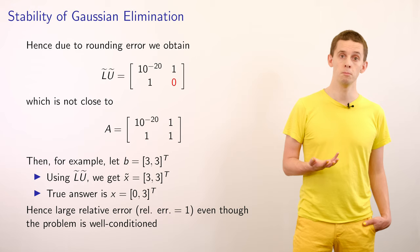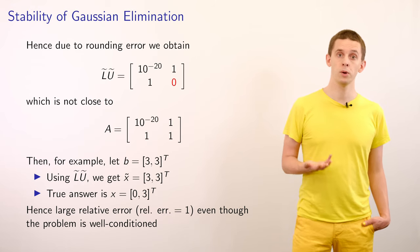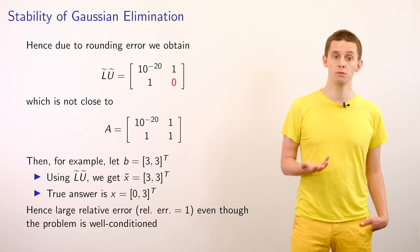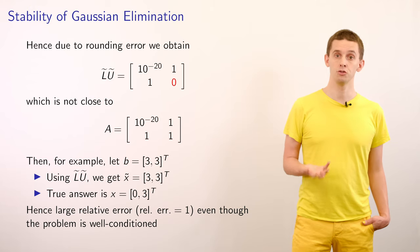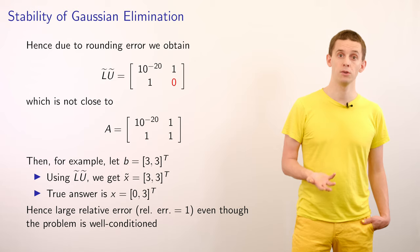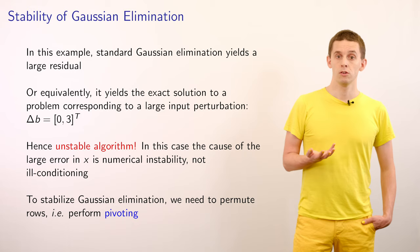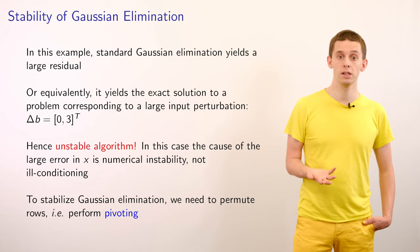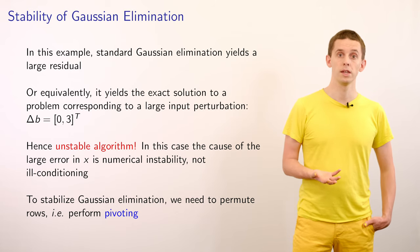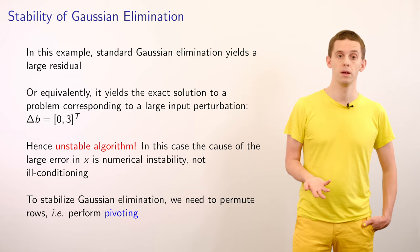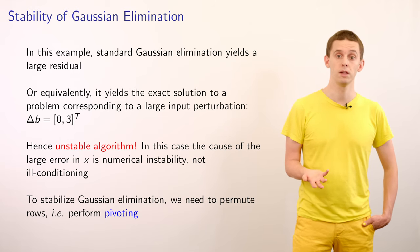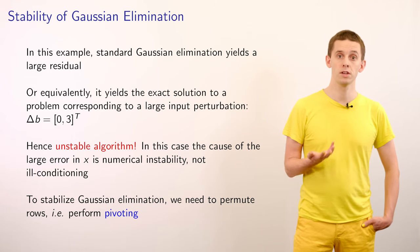For example, suppose B equals [3, 3] as our source term. Using our finite precision factors L-tilde and U-tilde, our numerical solution X-tilde would equal [3, 3], while the true answer is [0, 3]. We're seeing a large relative error even though we have a well-conditioned mathematical problem. Standard Gaussian elimination leads to a large residual — equivalently, it yields an exact solution corresponding to a large input perturbation delta B equal to [0, 3]. Hence, we're seeing an unstable algorithm where the large error is due to numerical instability, not ill-conditioning.